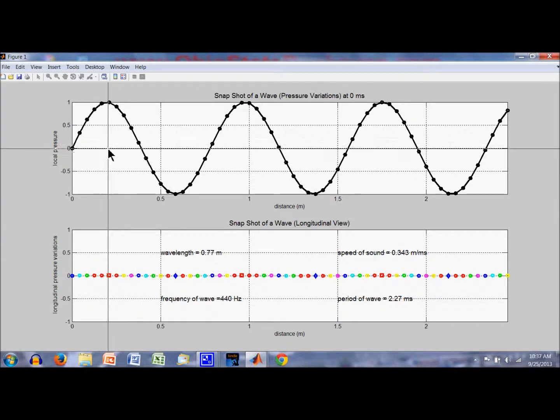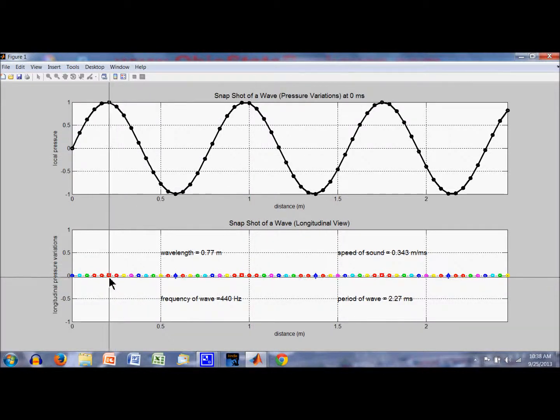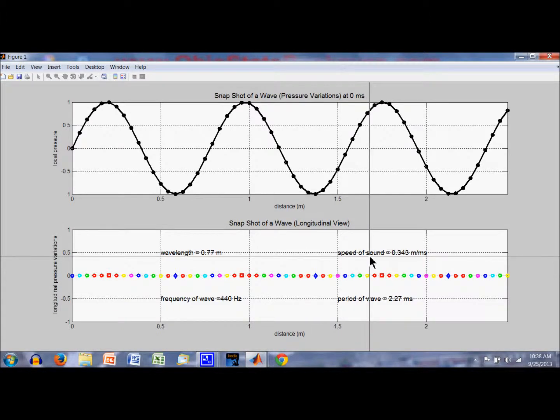As this wave propagates, this point of compression will move to the right. This red square will move to the right, and it will move to the right at the speed of sound, which is 343 meters per second.